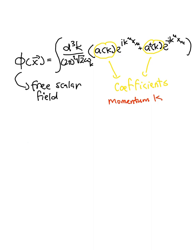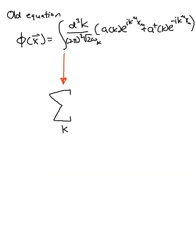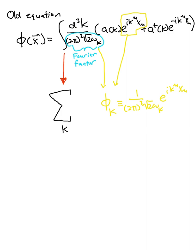This equation is pretty big already, so let's use some simplifying notation. Let's change our integral sign to a summation, since integrals are really just continuous summations. Let's denote the plane waves scaled by the Fourier factor with the letter phi, and let's put the momentum dependent on the coefficients as a subscript.